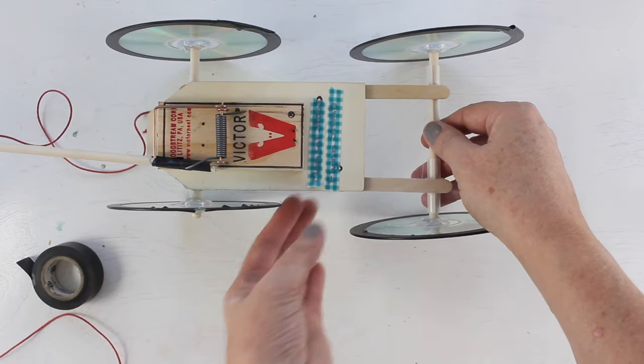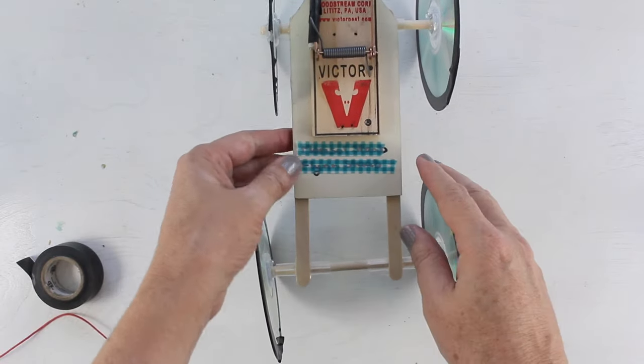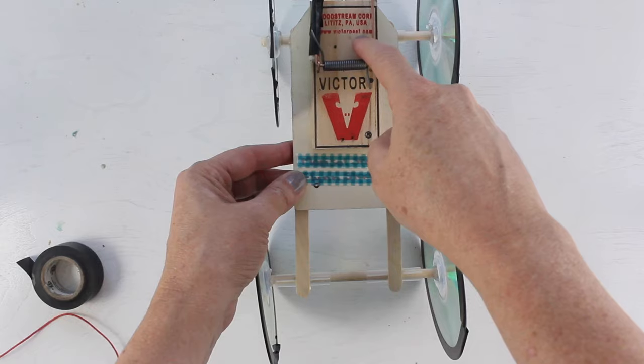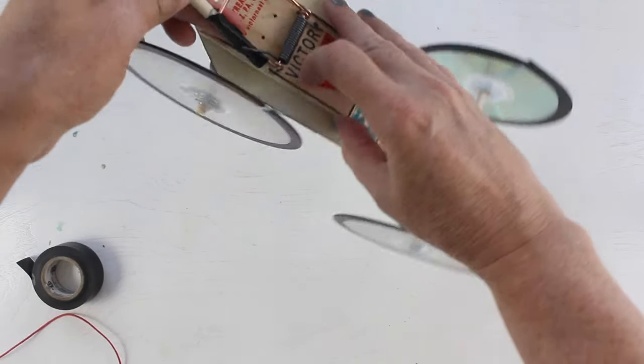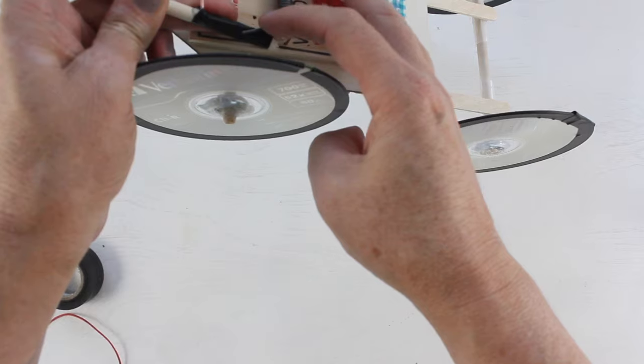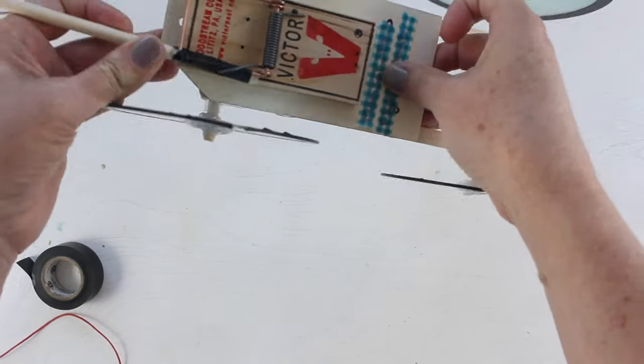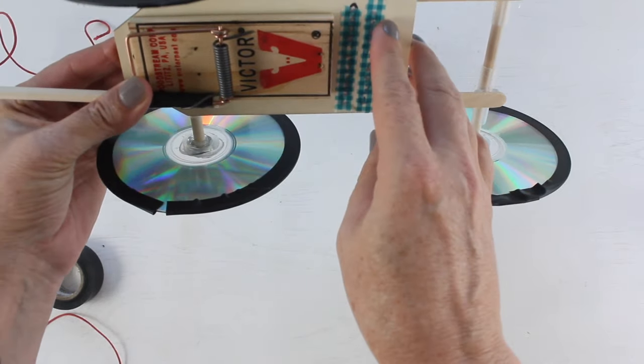Now the first thing you want to do is remove these parts from your mousetrap. I'm not sure if you can see it here, but we keep that arm and this section intact and then glue it down to the wood.